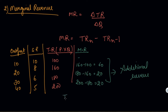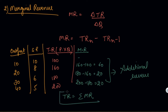Your TR is the summation of MR, which means you keep adding MR values to get TR: 100 plus 60 gives 160, plus 20 gives 180, plus 20 gives 200. This is another formula we have derived.